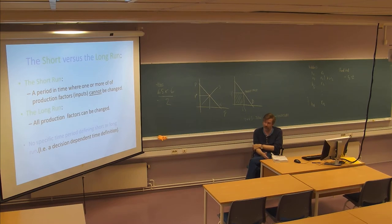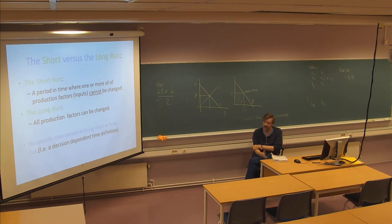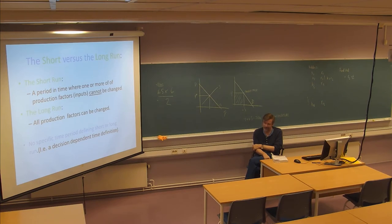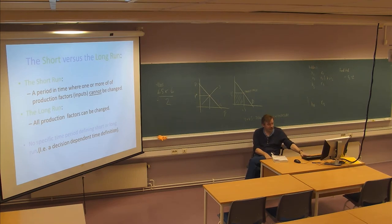In the long run, all production factors can be changed. So short and long run is related to the type of decisions we make — keeping one or several fixed while letting others change. In principle there is no specific time period; we don't say the short run is one year or six months. It's a description-dependent time definition — dependent on what decisions we are interested in examining.